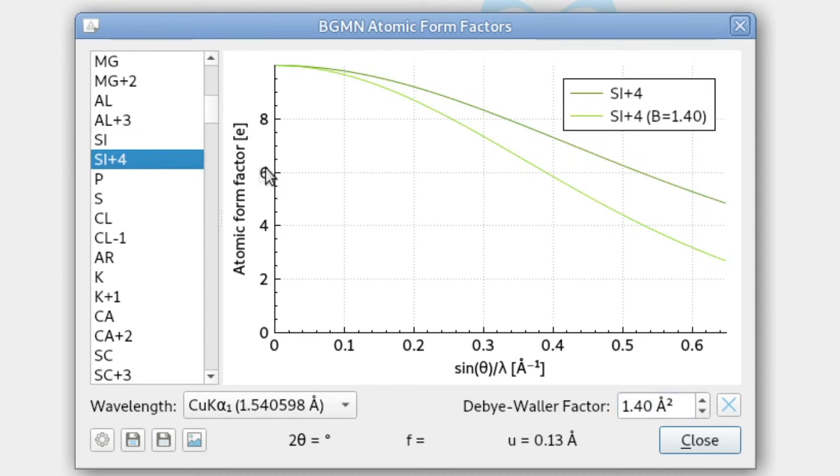Let's just select one, and now we can see that without thermal vibration, the top curve, we get more scattering power than with a high amount of thermal vibration. Because the atomic position is smeared, we get more interference among the scattered waves, so more attenuation of the scattered radiation.